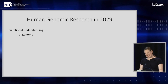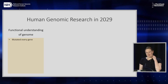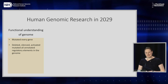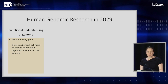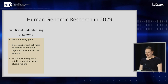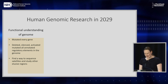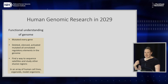I've tried to come up with three predictions. In terms of understanding the human genome, I think we will have mutated every gene in the genome. I think we will have deleted, silenced, activated, and mutated all annotated regulatory elements. We need a consortium-level approach to this, harnessing all of the different CRISPR-Cas9 technologies. We also need to work out the missing parts — can we sequence the satellites and other elusive regions? And to be truly biologically informative, we need to do this in an array of human cell lines, organoids, and model organisms.